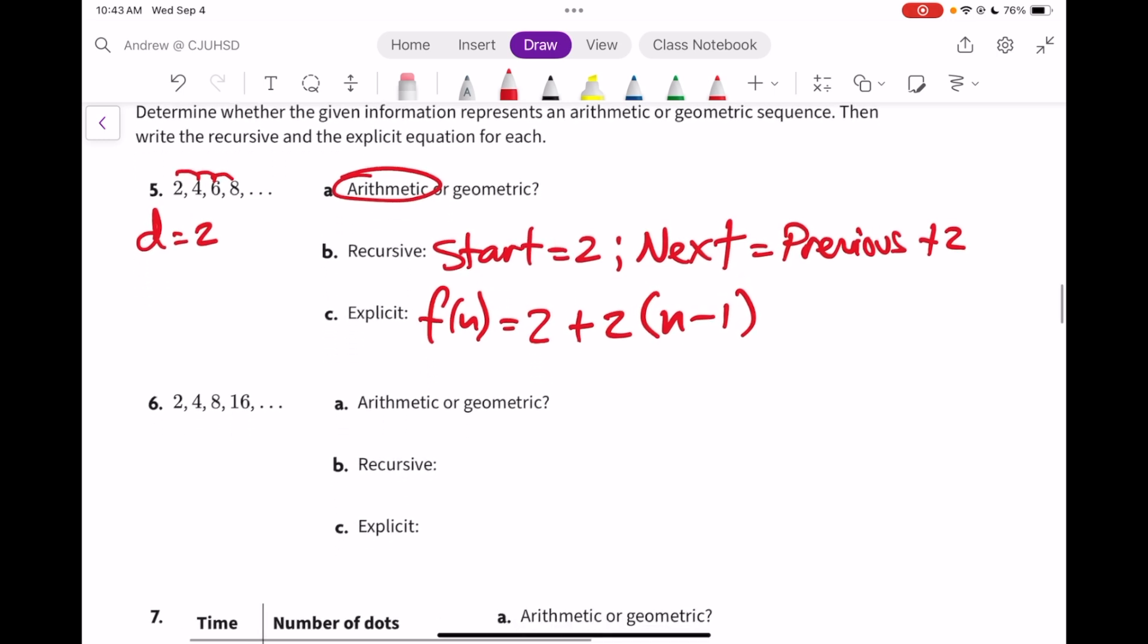Number 6 is a multiplying pattern. You wouldn't know until the third number because although you can add 2 to go from 2 to 4, you need to multiply by 2 to go from 4 to 8. So the common ratio here is 2. That makes it geometric.